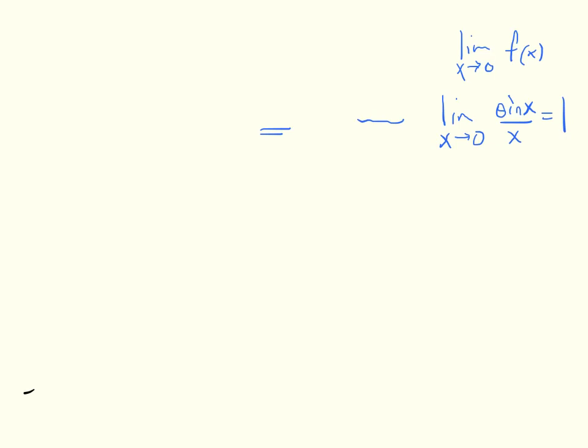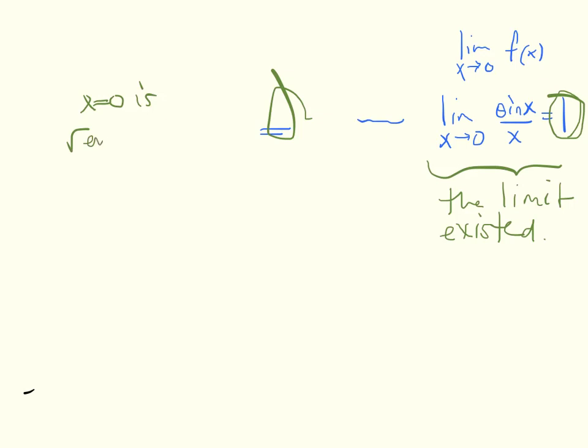But the final part of continuity says does that thing equal that thing? The answer is no. But the key observation was that the limit existed. Therefore, x equals zero is removable.